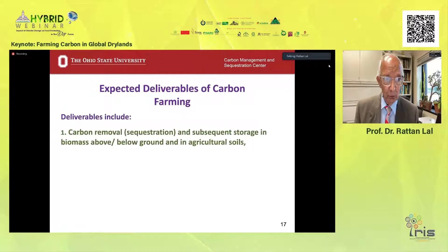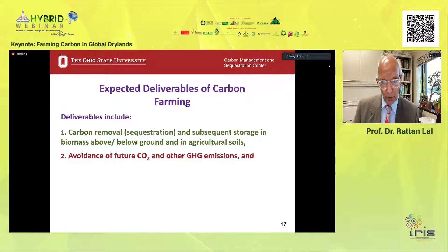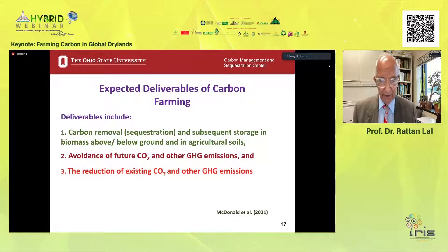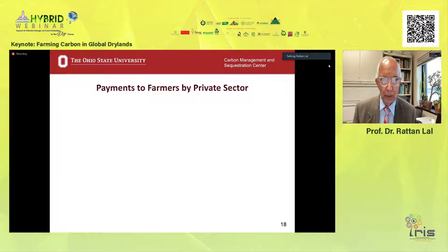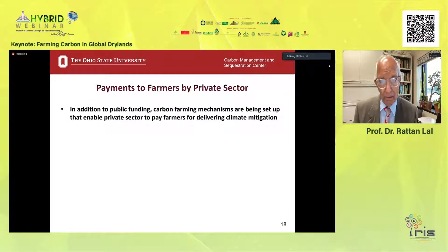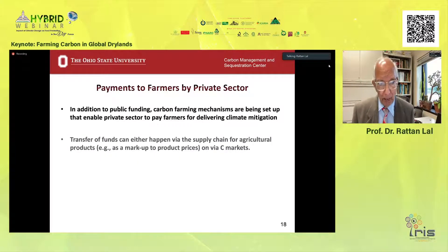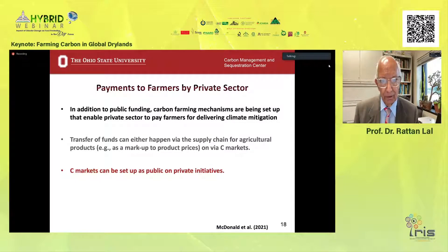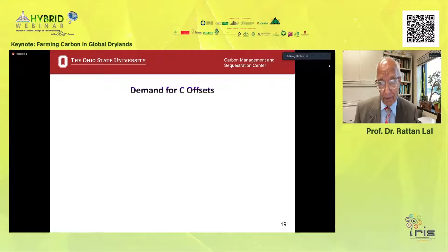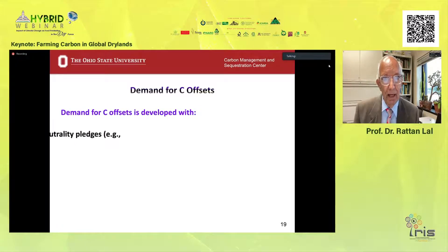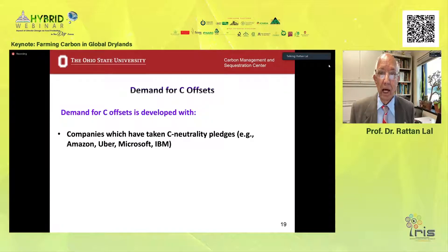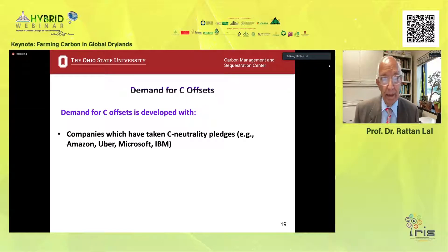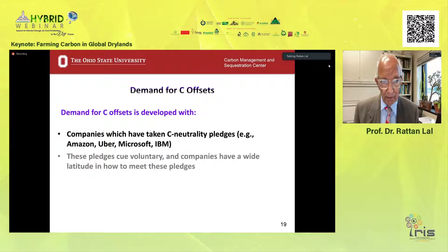Expected deliverables of carbon farming include carbon removal from the atmosphere and subsequent storage in the industrial ecosystem, avoidance of future CO2 and other greenhouse gas emissions, and the reduction of existing CO2 and other greenhouse gases. Farmers should be paid by public funding, private funding, by industry, and through transfer of funds from the supply chain of agricultural products. There are several options, including carbon markets. Carbon markets are not yet well developed, especially in developing countries. Demand for carbon offsets also needs to be developed. Companies such as Uber, Amazon, Microsoft, Sony, and IBM have taken carbon neutrality pledges and can provide income by getting carbon credits from farmers, ranchers, and foresters.